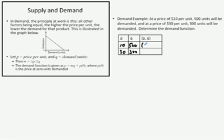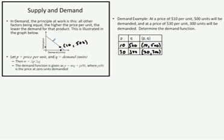In this case, I'm going to put an ordered pair: 10 comma 500. If we were graphing this, we could use these coordinate points to help us plot our demand function. We might say that if the unit price is 10, our demand is 500 — that's 500 units here, 10 for the unit price. And then if the price is $30, our demand is only 300. So at $30, our demand is 300. You can see that relationship between price and demand. Let's determine the demand function.